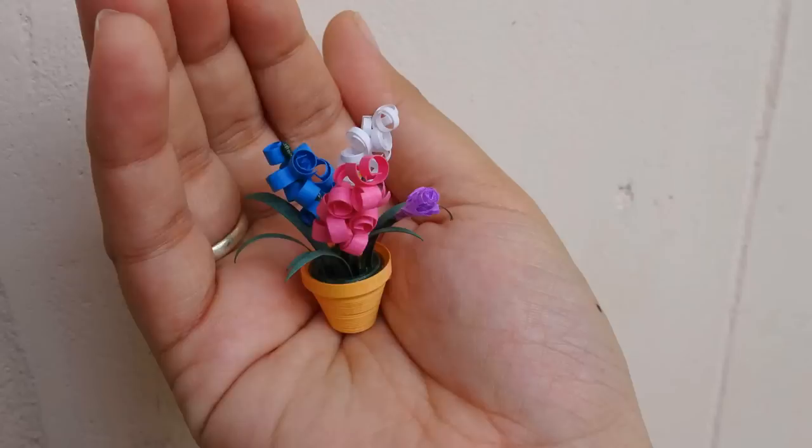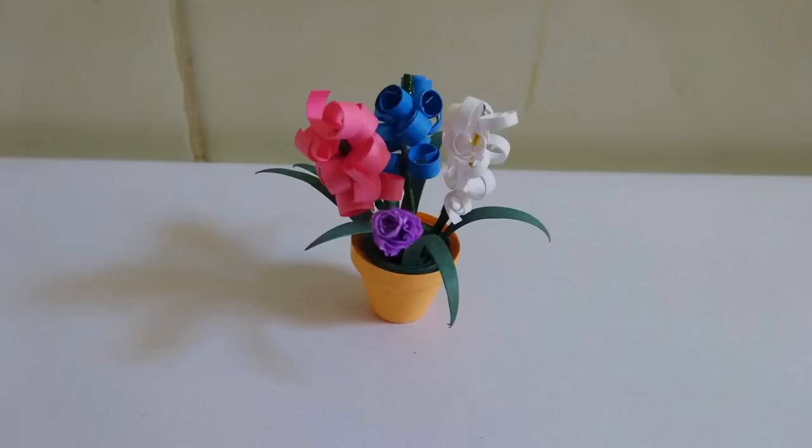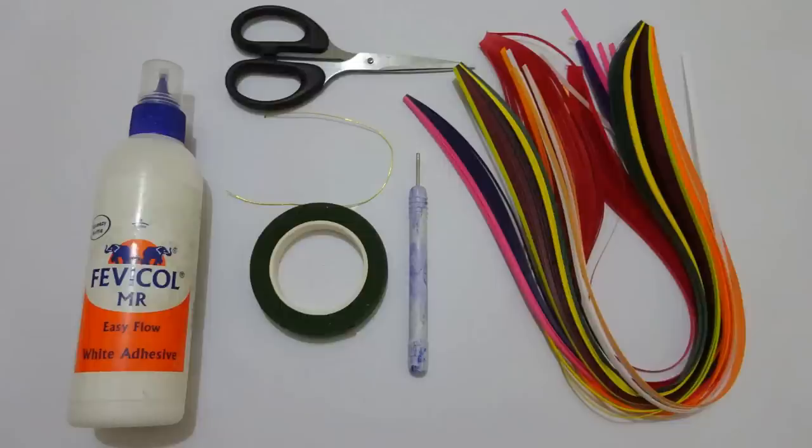Hey everyone, welcome back to my channel. Today we will learn how to make a quilling miniature pot. For that, we will need some quilling strips, rolling pin, green tape, flour making wire, scissor, and fabric oil or any glue. So let's start.